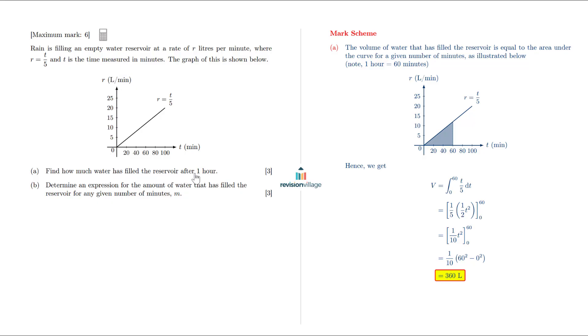Now the question says, how much water has filled the reservoir after one hour? So it would be a mistake to go to 60 minutes, go up, find the corresponding vertical axis, because this vertical axis isn't the amount of water, it's the rate of change, it's the derivative of the amount of water. So to answer question A, you actually need to find the area under the curve for 60 minutes.